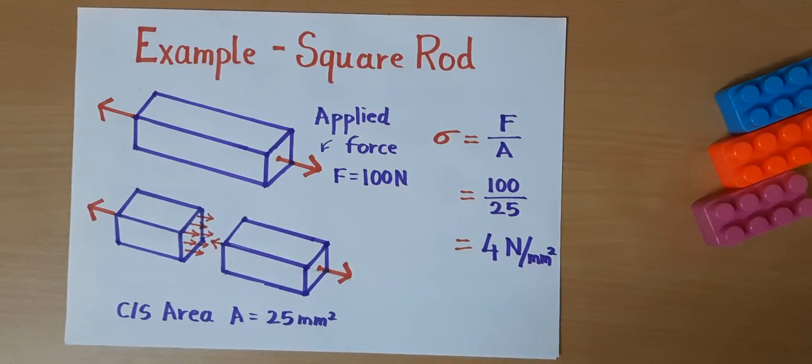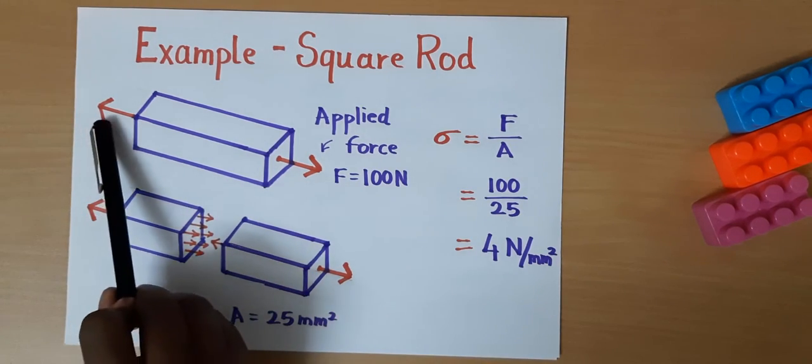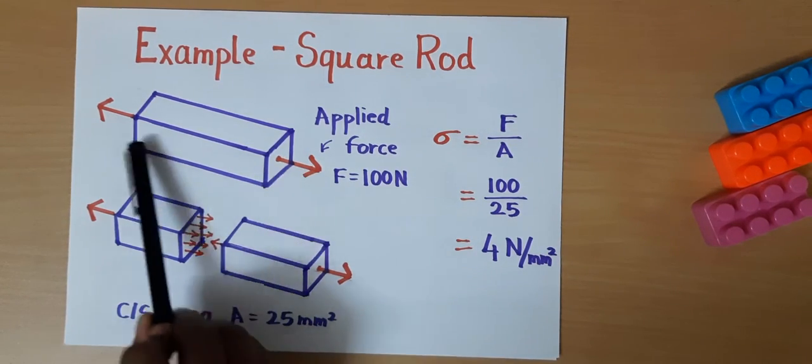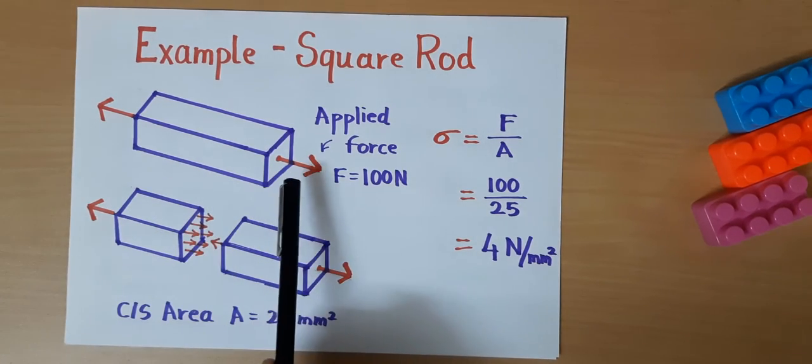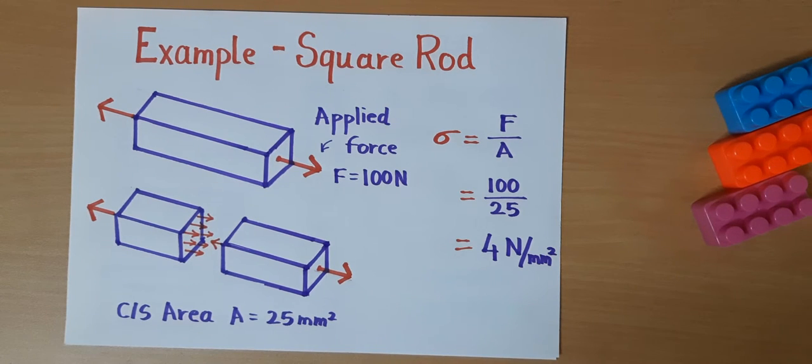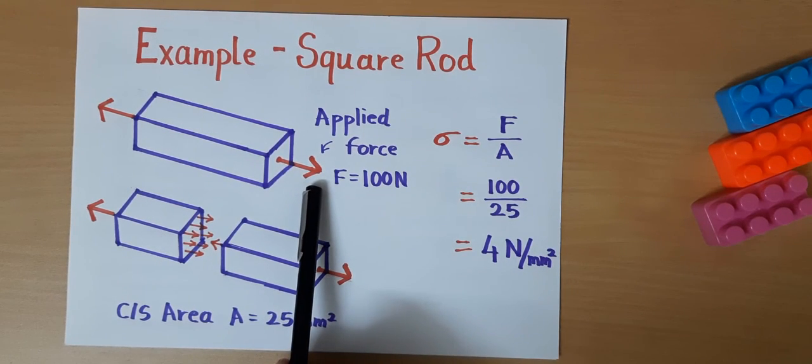Let's take an example of a square rod. On the square rod, I have applied a load which is tensile in nature. It is applied along the axis of the square rod. That's why it is called a uniaxial tensile load. When we apply the load on this square bar, what happens?